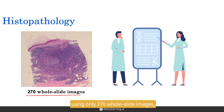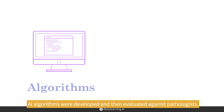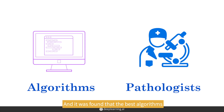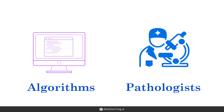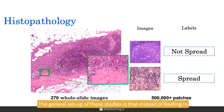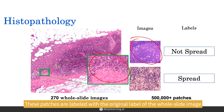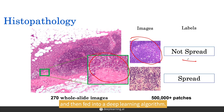In one study in 2017, using only 270 whole slide images, AI algorithms were developed and then evaluated against pathologists, and it was found that the best algorithms performed as well as the pathologist did. The general setup of these studies is that instead of feeding in one large high-resolution digital image of the slide, several patches are extracted at a high magnification and used to train a model. These patches are labeled with the original label of the whole slide image and then fed into a deep learning algorithm.